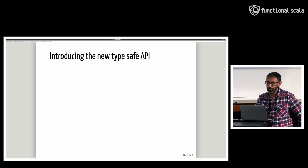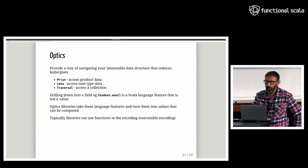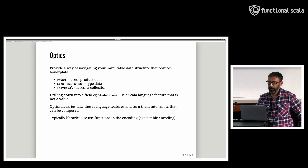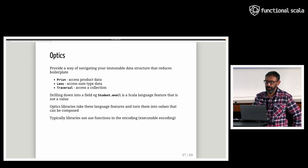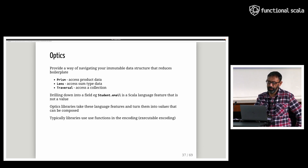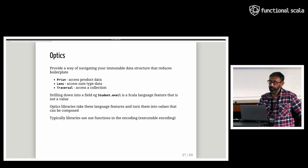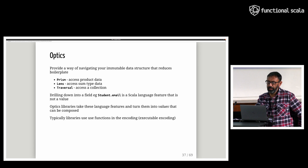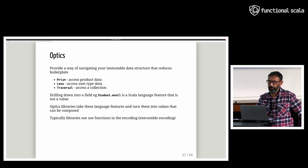Before I can talk about the new TypeSafe API, we need to briefly touch on optics. Optics provide a way of navigating immutable data structures that reduces boilerplate. There are three kinds: a prism, which accesses product data; a lens, which accesses sum type data; and traversal, which accesses a collection. Drilling down into a field, e.g. student.email, is a Scala language feature that is not a value. Optics libraries take these language features and turn them into values that can be composed — typically using functions in what is called executable encoding.